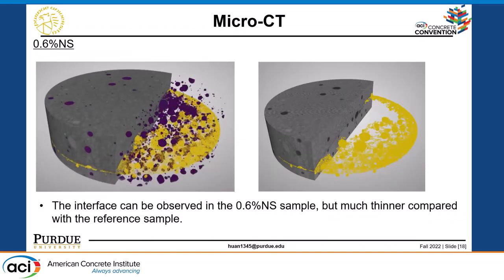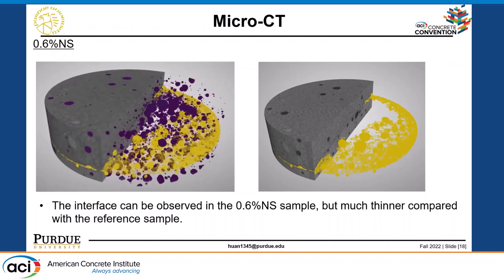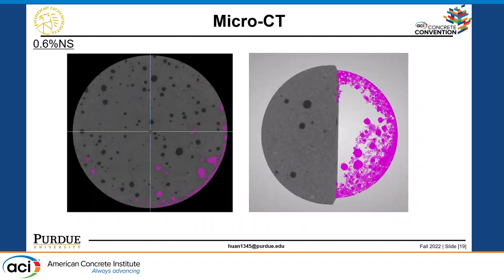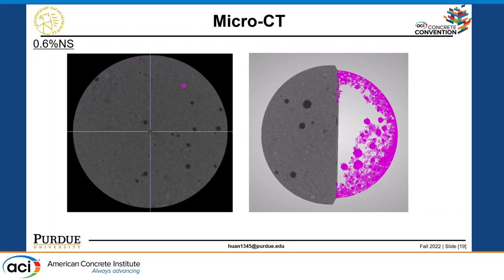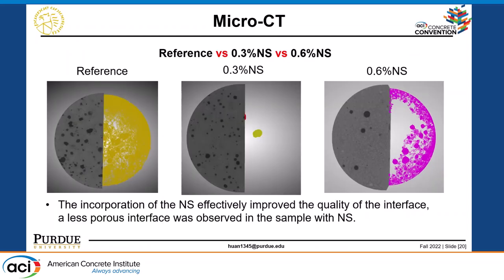For the 0.6% nanosilica, we continued to increase the dosage. This one was not as good as 0.3% nanosilica, but still better than the reference. We extracted the interface, and it is much thinner and more consistent with smaller pore size. Looking in another direction, both 0.3% and 0.6% nanosilica create a better interface than the reference sample. Based on that, we believe we can achieve a denser and stronger interface using nanosilica. The mechanisms include the pozzolanic reaction and filler effect, and we also have some other observations to introduce.